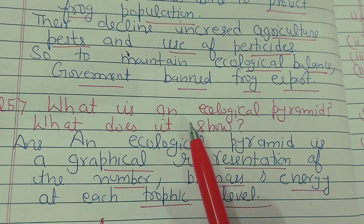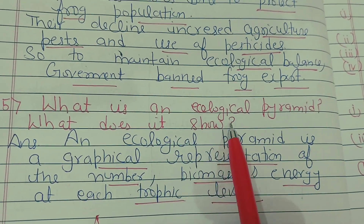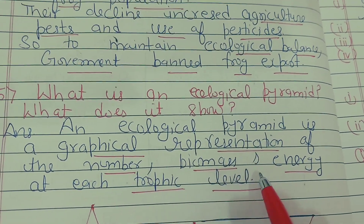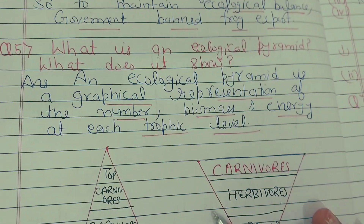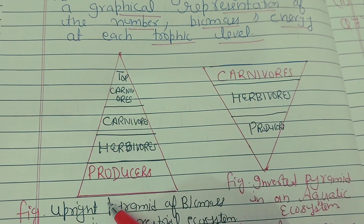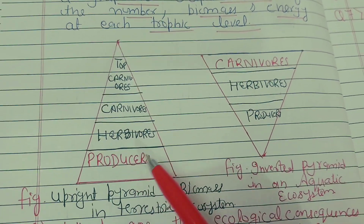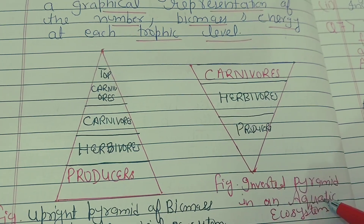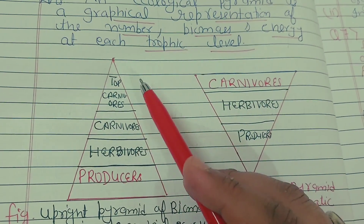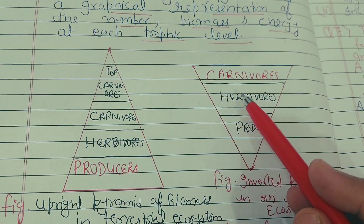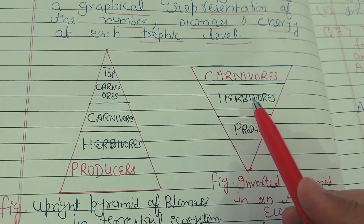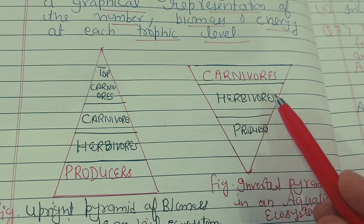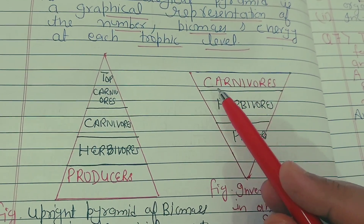Question number five: what is an ecological pyramid and what does it show? It is a very important question. An ecological pyramid is a graphical representation of the number, biomass, and energy at each trophic level. Must draw the diagram in your exam. There is an upright pyramid of biomass for a terrestrial ecosystem, and an inverted pyramid of biomass for an aquatic or pond ecosystem. In the upright pyramid, producers' mass is maximum; in the inverted one, carnivores have greater biomass.